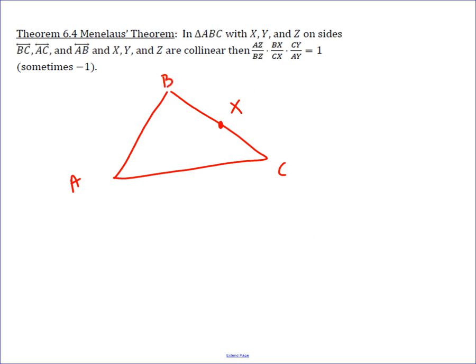And then Y somewhere right here. And then Z is actually, to be collinear and on AB, has to be on AB extended, which is the key here.